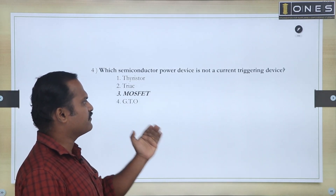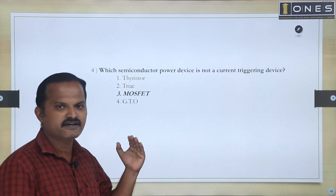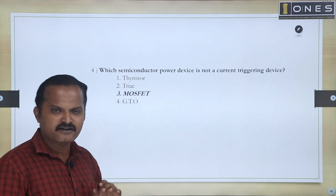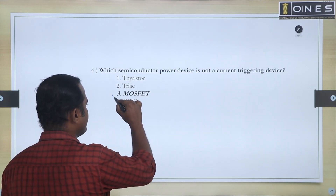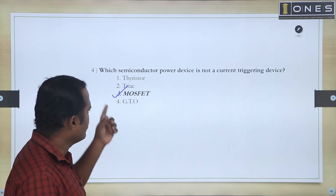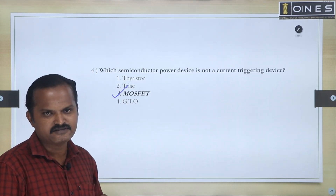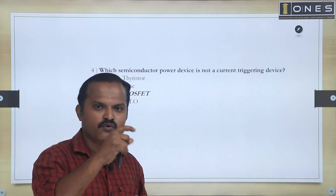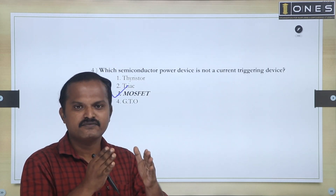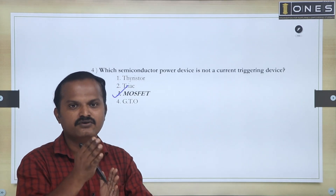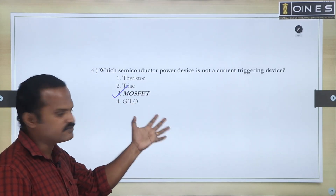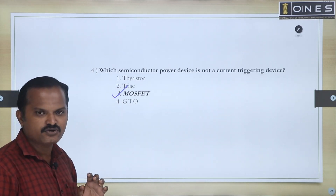Fourth question: Which semiconductor power device is not a current triggering device? For MOSFET, in order to trigger the device, we need a voltage Vp greater than the gate-source voltage Vgs. It requires a particular voltage to provide conduction — it is a voltage-triggered device, not current-triggered. So the answer is MOSFET.